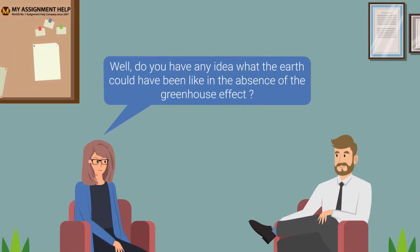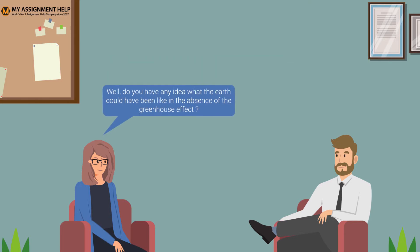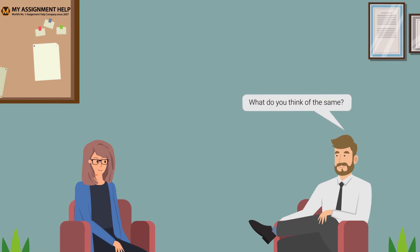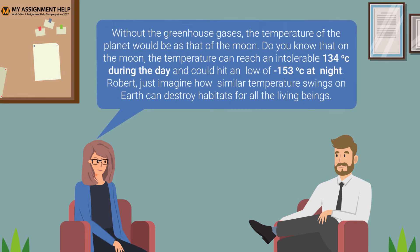Well, do you have any idea what the earth could have been like in the absence of the greenhouse effect? Without the greenhouse gases, the temperature of the planet would be as that of the moon. Do you know that on the moon, the temperature can reach an intolerable 134 degrees Celsius during the day and could hit a low of minus 153 degrees Celsius at night? Just imagine how similar temperature swings on earth can destroy habitats for all living beings.